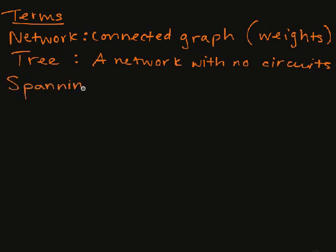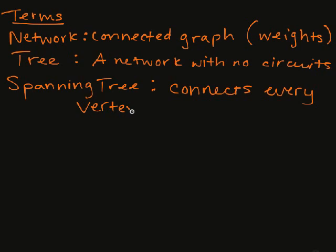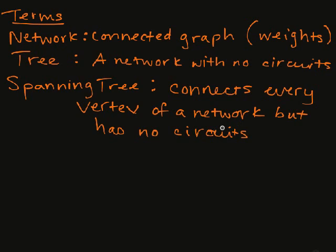In particular, of importance in most of these applications is that we want to actually hit every one of the vertices, every computer in that computer connection problem. This is a spanning tree. A spanning tree connects every vertex of a network but has no circuits. Notice the difference between a tree and a spanning tree. A tree might connect only a portion of the network. It could only connect a couple of vertices. A spanning tree has to connect all of the vertices but neither one of them can contain circuits.